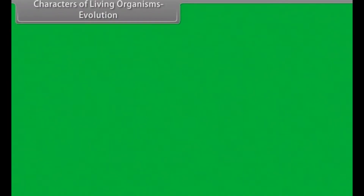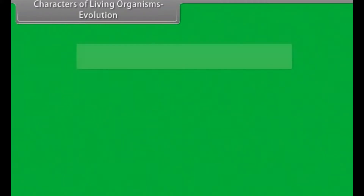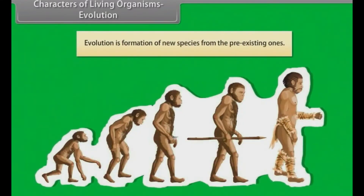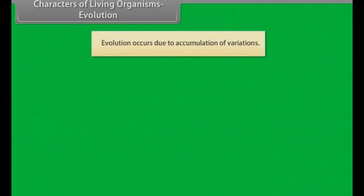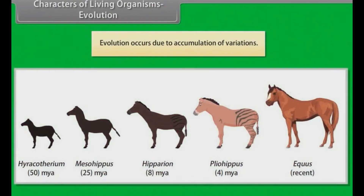Evolution is the formation of new species from pre-existing ones. Evolution occurs due to the accumulation of variations.